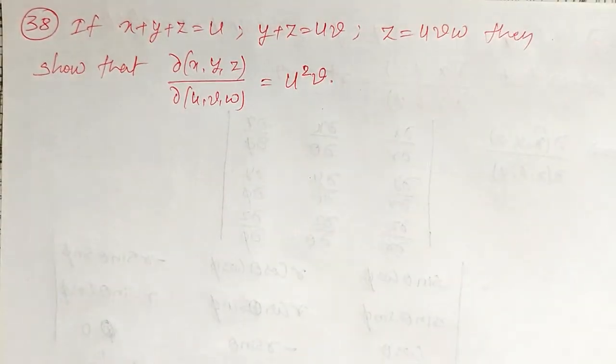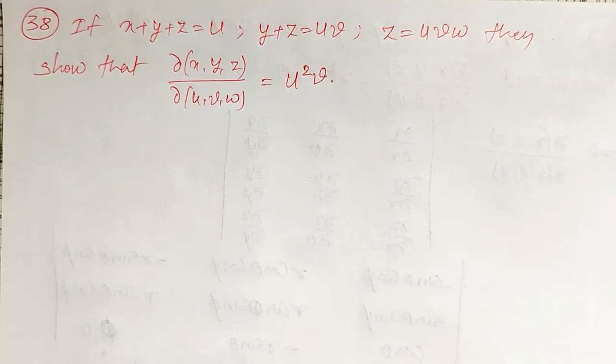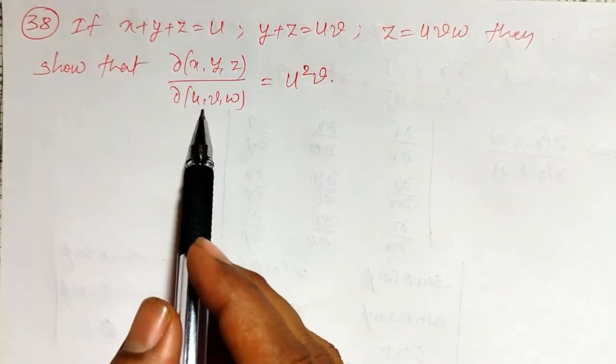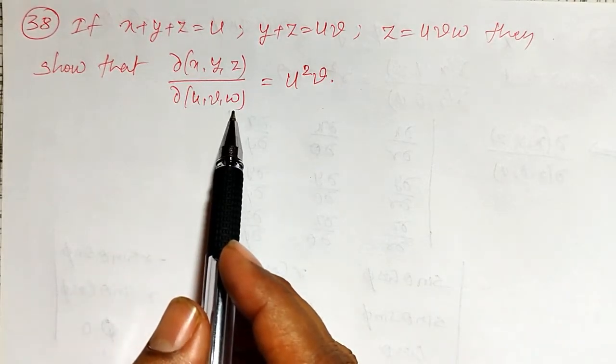Welcome friends. In this video, I am going to solve an example on a Jacobian of x, y, z with respect to u, v, w.